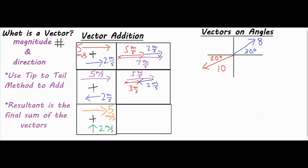The last example gets slightly more complex. We have a vector that goes over five and one that goes up. When you connect the starting point to the ending point, you get an angled component. To solve this, you use the Pythagorean theorem: a² + b² = c². Here, a and b are the two sides of the right triangle and c is the hypotenuse.